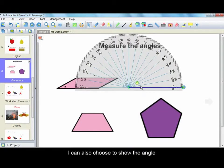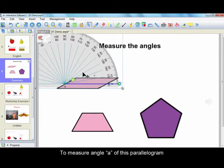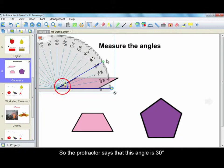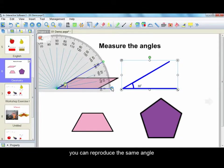I can also choose to show the angle while I do the measuring. To measure angle A of this parallelogram, place the cursor on this green circle and then hold and drag to measure. So the protractor says that this angle is 30 degrees. By clicking on this arrow here, you can reproduce the same angle.